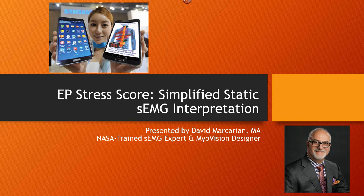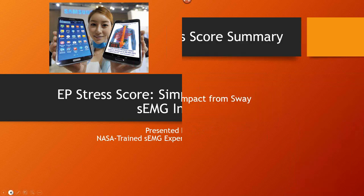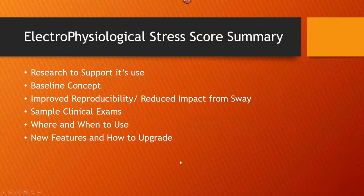Hello everybody, this is David Markarian, I'm the inventor of the MyoVision. What I'm going to talk to you about today is the EP Stress Score — a new way of looking at static EMG, which has been a huge hit for many different reasons. It stands for Electrophysiological Stress Score. We're going to cover the research used to support it, the concept of utilizing a baseline — very similar to doing a blood pressure measurement — the improved reproducibility, some sample clinical exams, where and when to use it, and some new features and how to upgrade.